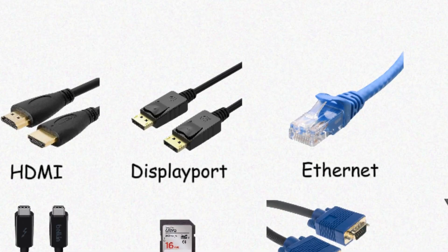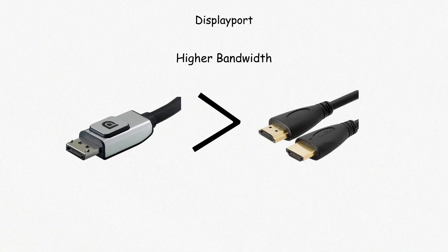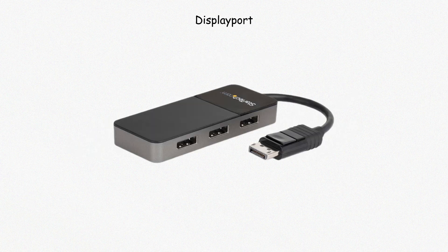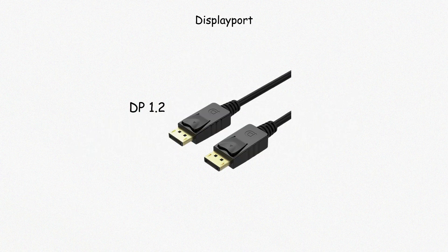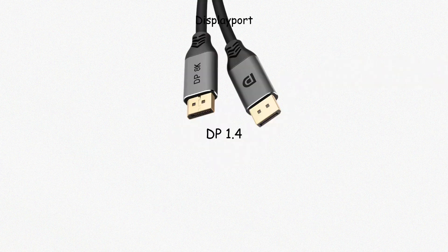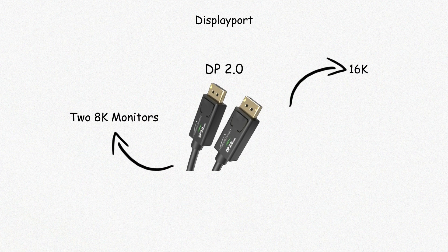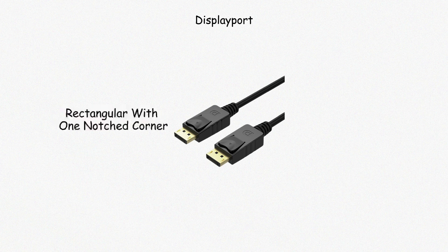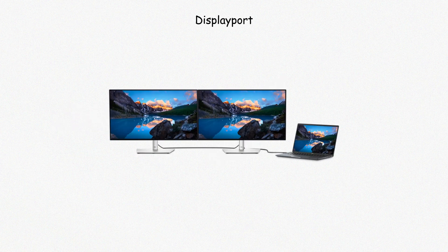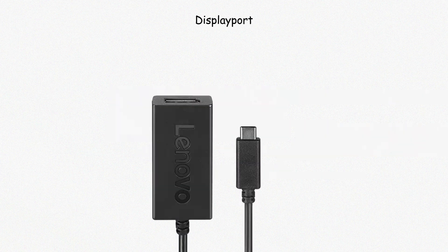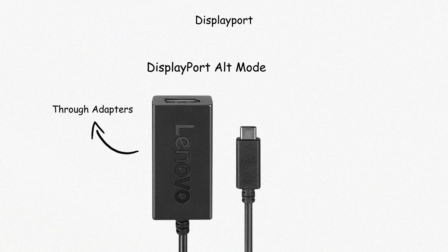DisplayPort also sends digital video and audio. It supports higher bandwidth than HDMI and can drive multiple monitors from one port. DisplayPort 1.2 supports 4K at 60 hertz, version 1.4 allows 8K, and DisplayPort 2.0 supports up to 16K or two 8K monitors. The connector is rectangular with one notched corner. DisplayPort allows daisy-chaining monitors; HDMI does not. Some USB-C ports support DisplayPort Alt Mode, allowing video output through adapters.